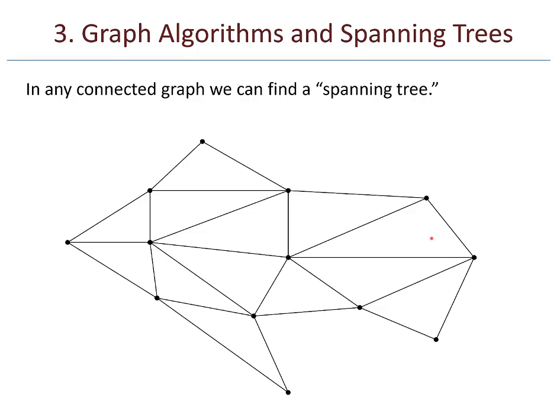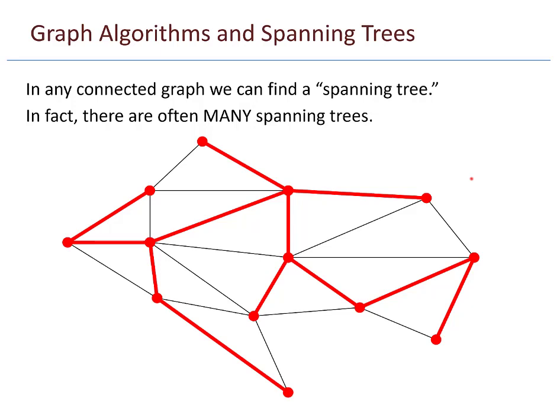In any connected graph, we can find a spanning tree. I'll outline one in red. What's outlined in red is a tree, and every vertex in the entire graph is included in that tree. In fact, there are typically many choices for spanning trees.